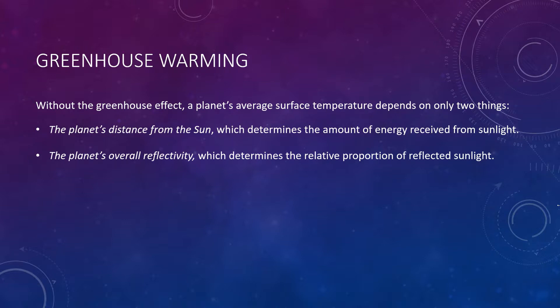First, the planet's distance from the sun, which determines how much energy is received from sunlight — in general, the closer a planet is to the sun, the greater the intensity of incoming sunlight. And second, the planet's overall reflectivity, which determines the relative proportions of incoming sunlight that are reflected back or absorbed by the surface. The higher the reflectivity, the less light absorbed and the cooler the planet.